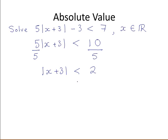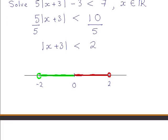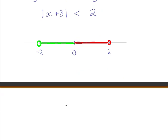That means that the distance between x plus 3 and 0 on the number line is less than 2. So we draw a number line. x plus 3 could be any value within distance 2 from 0. We can write this as the combined inequality: x plus 3 is any value between minus 2 and 2.